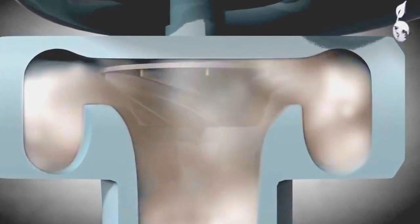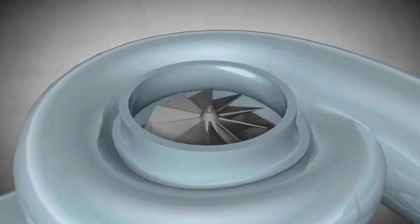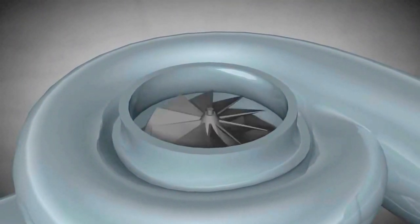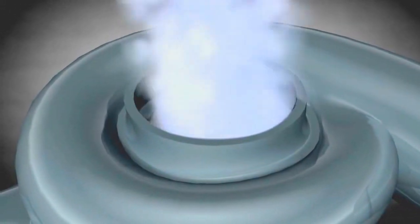As the turbine wheel and the compressor wheel share the same shaft, the compressor wheel spins at the same speed as the turbine wheel. Consequently, the compressor wheel draws in air and compresses it. Then, the air passes through the outlet port and supplies the engine with oxygen.